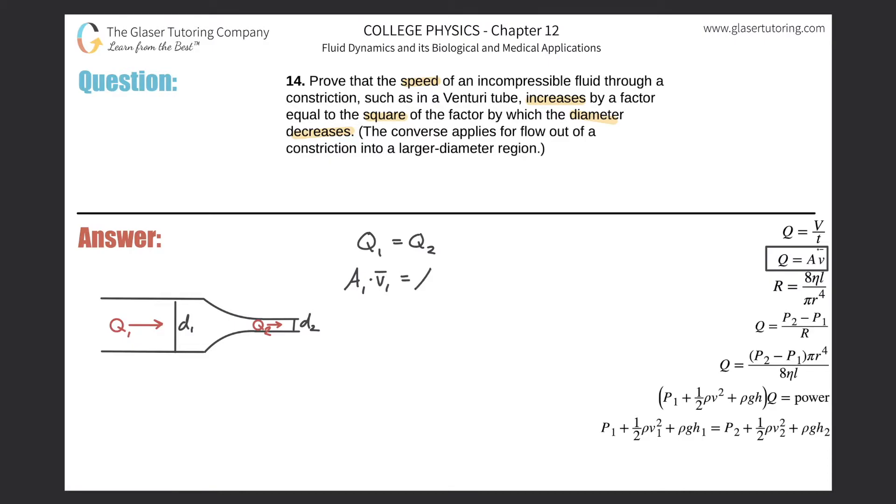So essentially, this is the area of the first portion multiplied by then the average velocity of the first portion. That's going to equal now the area of the second portion, cross-sectional area, that is. We multiply that by the velocity, the average velocity through that second portion. So now, I'm going to basically drop the bars from here on out. Just know that they're average.